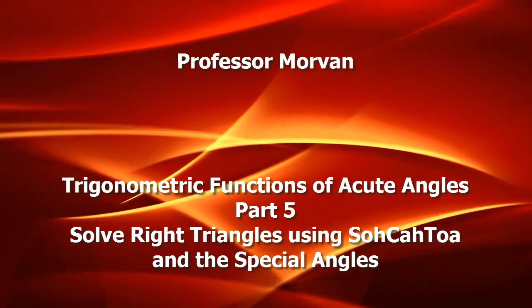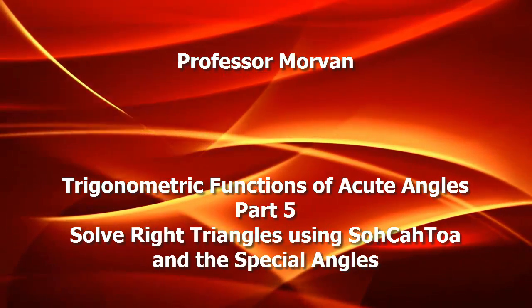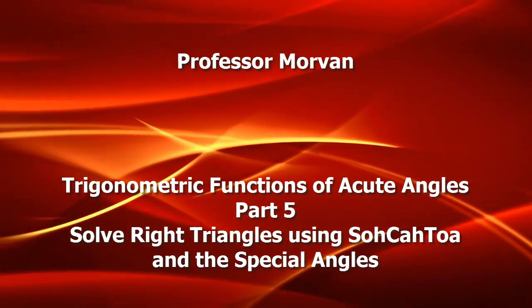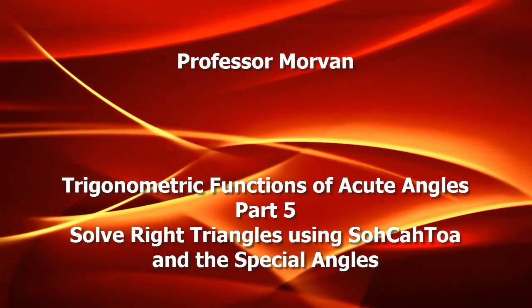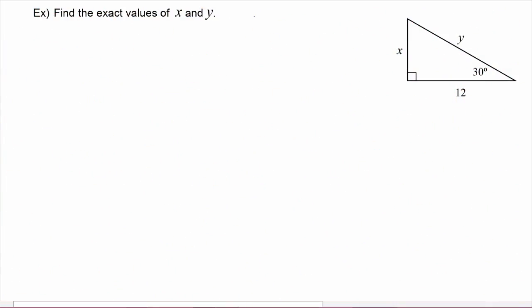In part five of our lesson on trigonometric functions of acute angles, you will learn how to solve right triangles using SOH CAH TOA and the special angles. In this example we have to find the exact values of x and y, so remember any time we have a right triangle we can use SOH CAH TOA, and we have to look at the triangle and see what parts we have.